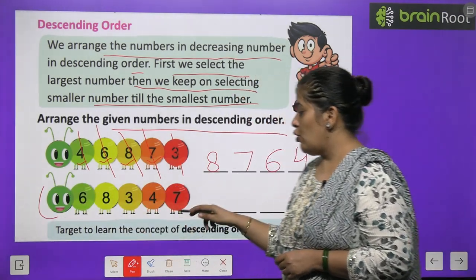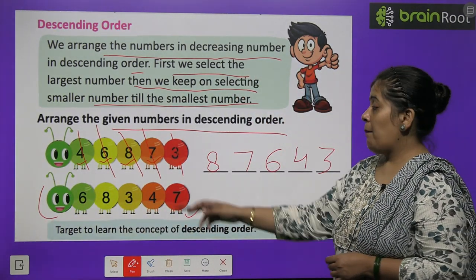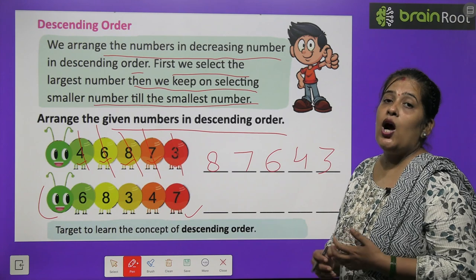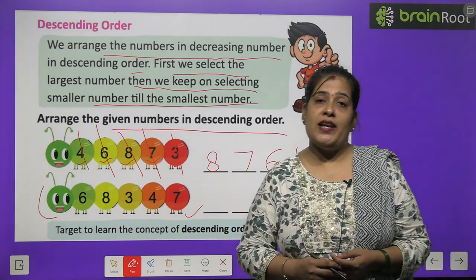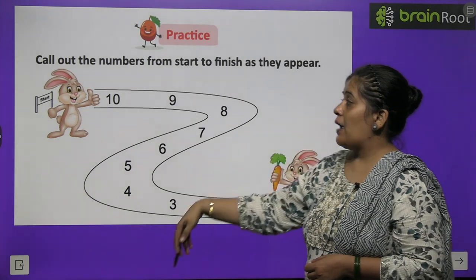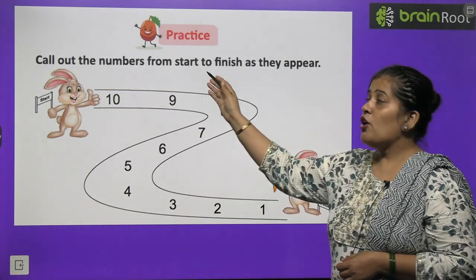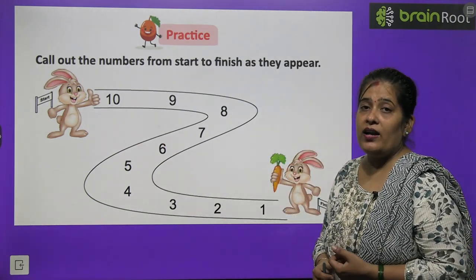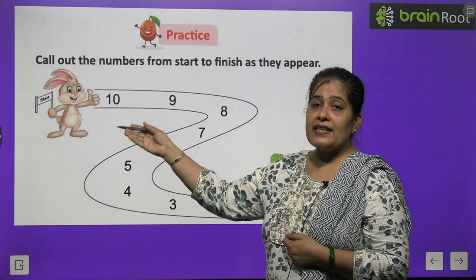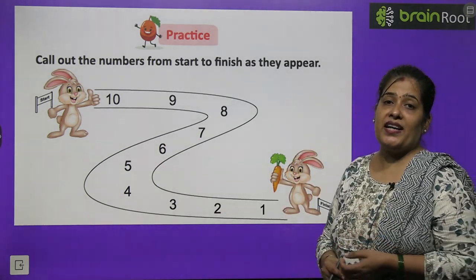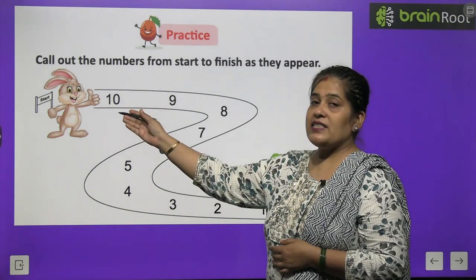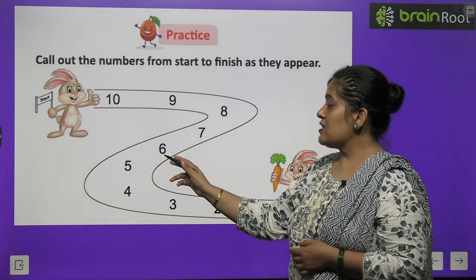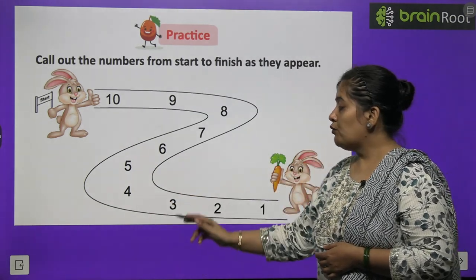And the next part you have to do by yourself. Aap akele in numbers ko padhenge, phir sabse bada number likhenge, uske baad usse chhota number, aur last mein sabse smallest number. Now the practice time — call out the numbers from start to finish as they appear. Number 10, 9, 8, 7, 6, 5, 4, 3, 2, and 1.